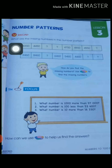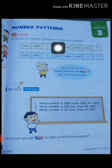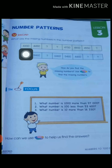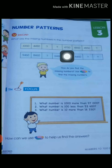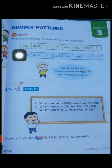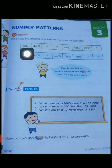The first question is: what are the missing numbers in the number pattern? Two number patterns are given and we have to find the missing numbers. Starting with the first number pattern, the first number is 4,350 and the second one is 4,450. The other given numbers are 4,750, 4,850, and 4,950. You can see that this number pattern follows the rule that each two consecutive numbers have a difference of 100.